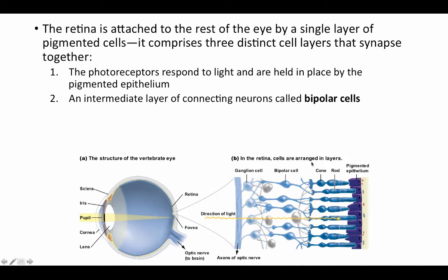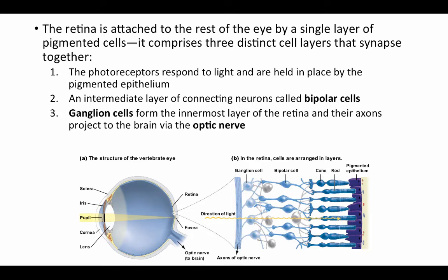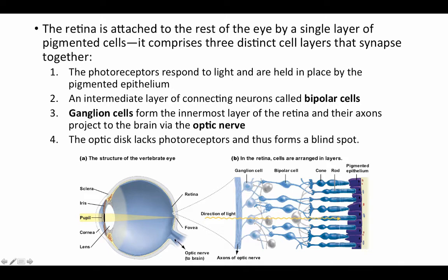An intermediate layer of connecting neurons called bipolar cells receive the light signals from those receptor cells and transmit them to a third layer of ganglion cells, which form the innermost layer of the retina. Their axons travel together in a big bundle and project to the brain via the optic nerve leaving the back of the eye. This area where the optic nerve leaves is called the optic disc. Because this is where the optic nerve is, there are no photoreceptors in this spot — it's a blind spot. We're generally not aware of it because our two eyes with overlapping fields of vision compensate for each other.